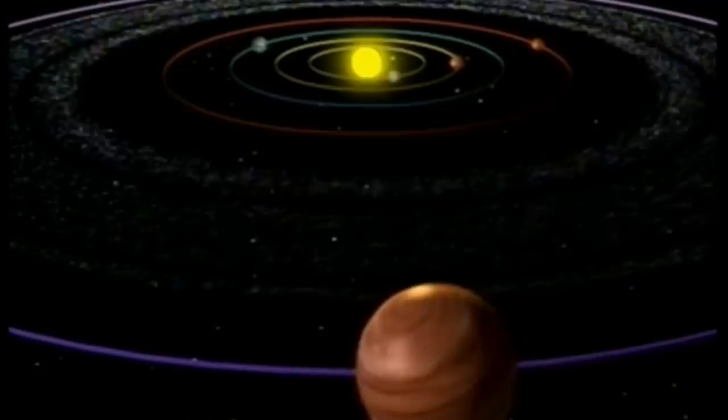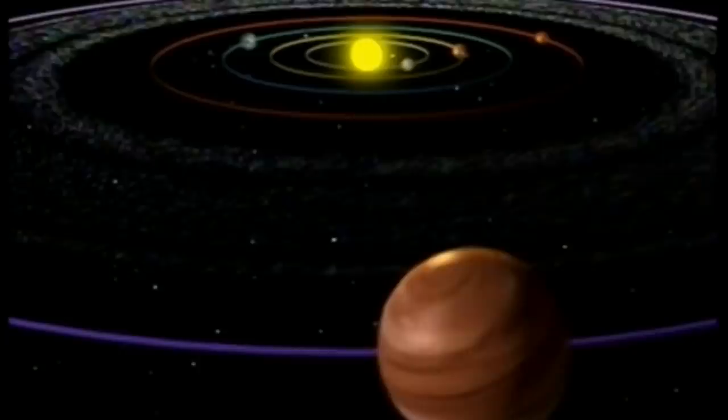La ceinture d'astéroïdes ressemble à une autoroute sur orbite. Ceux qui suivent la route restent tranquilles. Ceux qui en dévient deviennent une menace pour nous. 100,000 astéroïdes, au moins, traversent l'orbite de la Terre. 2000 d'entre eux sont assez gros pour nous causer quelques problèmes.